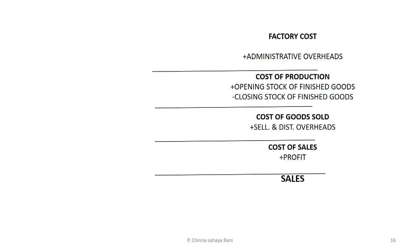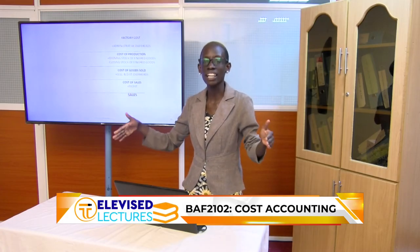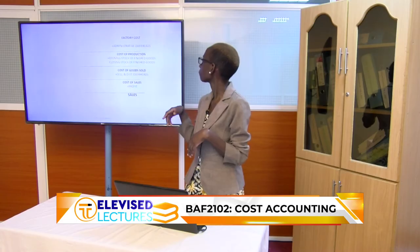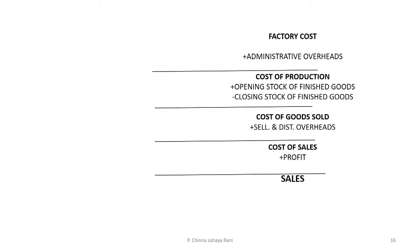Continuing with the cost sheet: after factory costs, we add administrative overheads to get cost of production. We then account for finished goods — opening stock of finished goods is added because items not sold in the previous year will be sold in this year, and closing stock of finished goods is deducted because it hasn't been sold in this year. This gives us cost of goods sold, then cost of sales, and adding profit gives us the selling price.